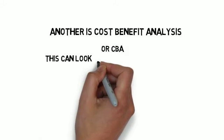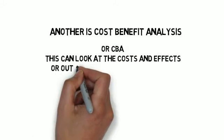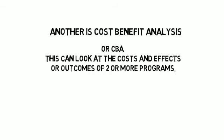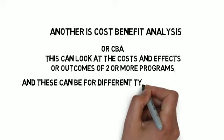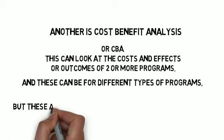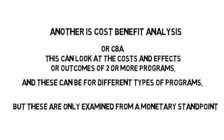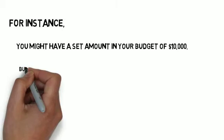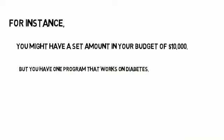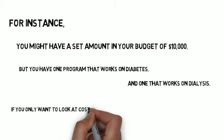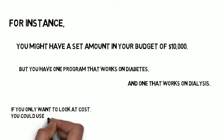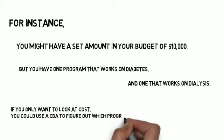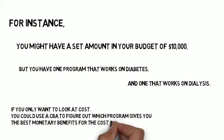Another is cost-benefit analysis, or CBA. This can look at the cost and effects or outcomes of two or more programs, and these can be for different types of programs. But these are only examined from a monetary standpoint. For instance, you might have a set amount in your budget of $10,000, but you have one program that works on diabetes and one that works on dialysis. You could use a CBA to figure out which program gives you the best monetary benefits for the costs.